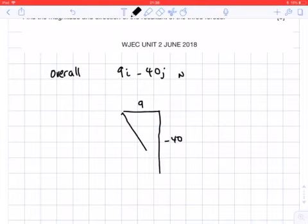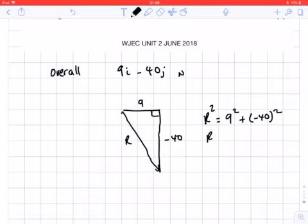So we're after our resultant force, which, as always, is our hypotenuse. If you know your Pythagoras, we know that R squared is 9 squared plus minus 40 squared.